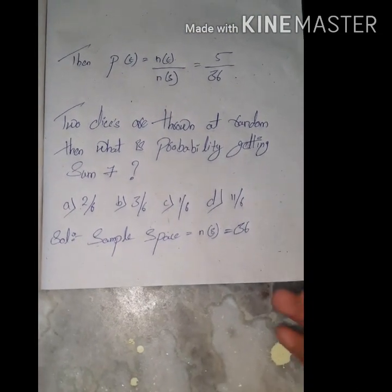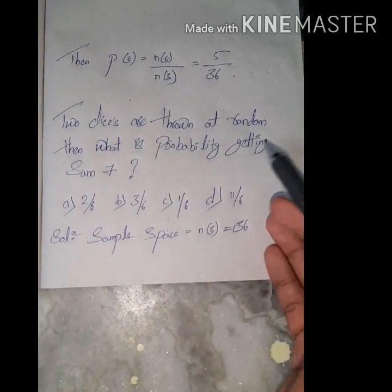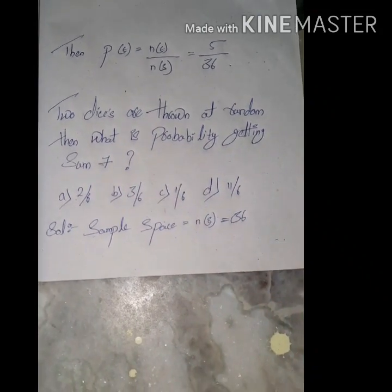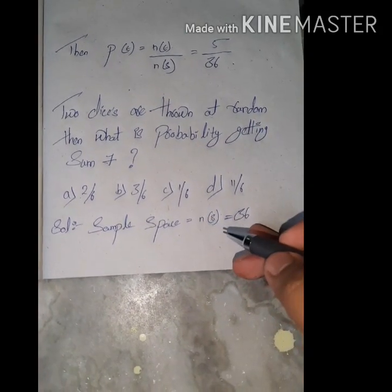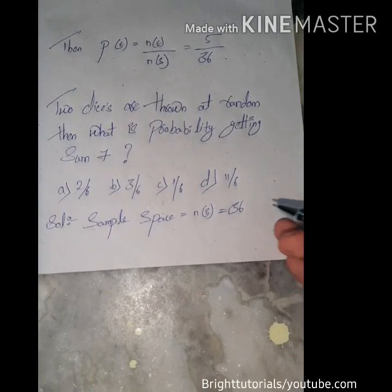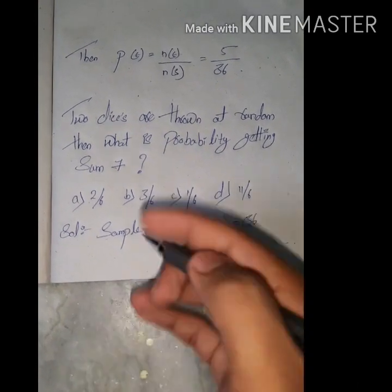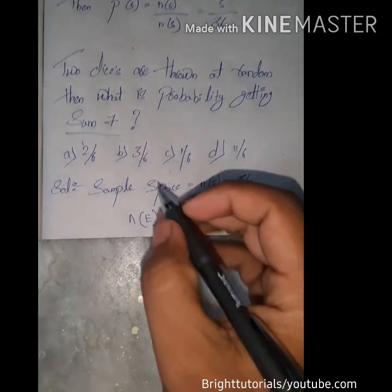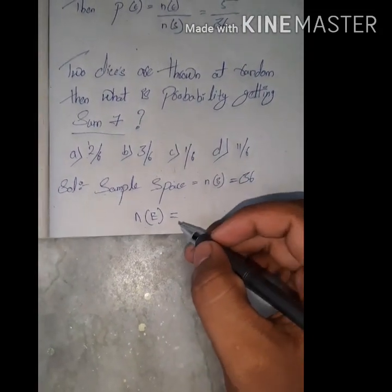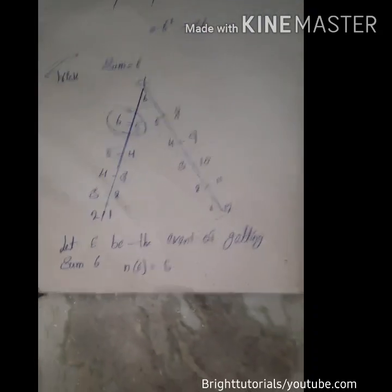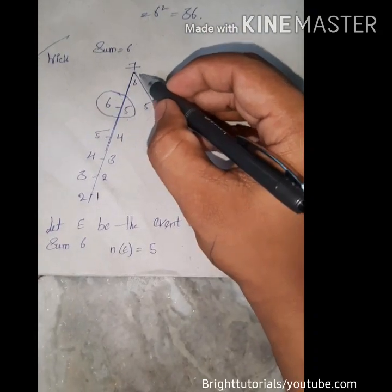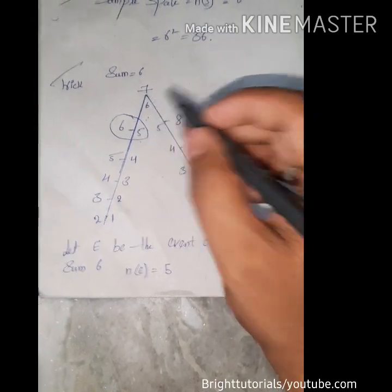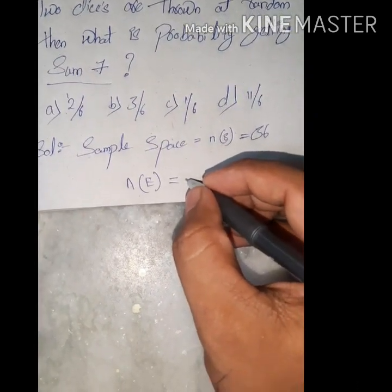Now we look at another question: two dice are thrown at random, then what is the probability of getting a sum equal to seven? First, the sample space for two dice gives n(S) = 36. To find n(E), we locate seven on the triangle and the corresponding inside value is six, so n(E) = 6.